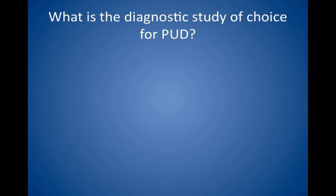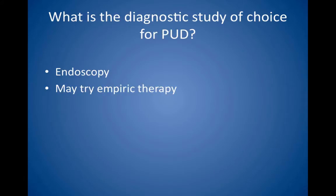What is the diagnostic study of choice for peptic ulcer disease? The gold standard is endoscopy, which is the most sensitive test. But an upper gastrointestinal barium study is cheaper and less invasive. Empiric treatment with medications may be tried in the absence of diagnostic studies, if the symptoms are typical. If endoscopy is done, a biopsy of any gastric ulcer is mandatory to exclude malignancy. Duodenal ulcers do not have to be biopsied initially, because malignancy is rare.